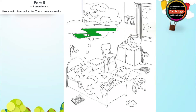Now listen to part five again. One. I can see a star outside. Can I colour that star now? Yes. Good idea. What colour do you want? I've got a yellow pencil here. Is that colour OK? Yes, that's fine.